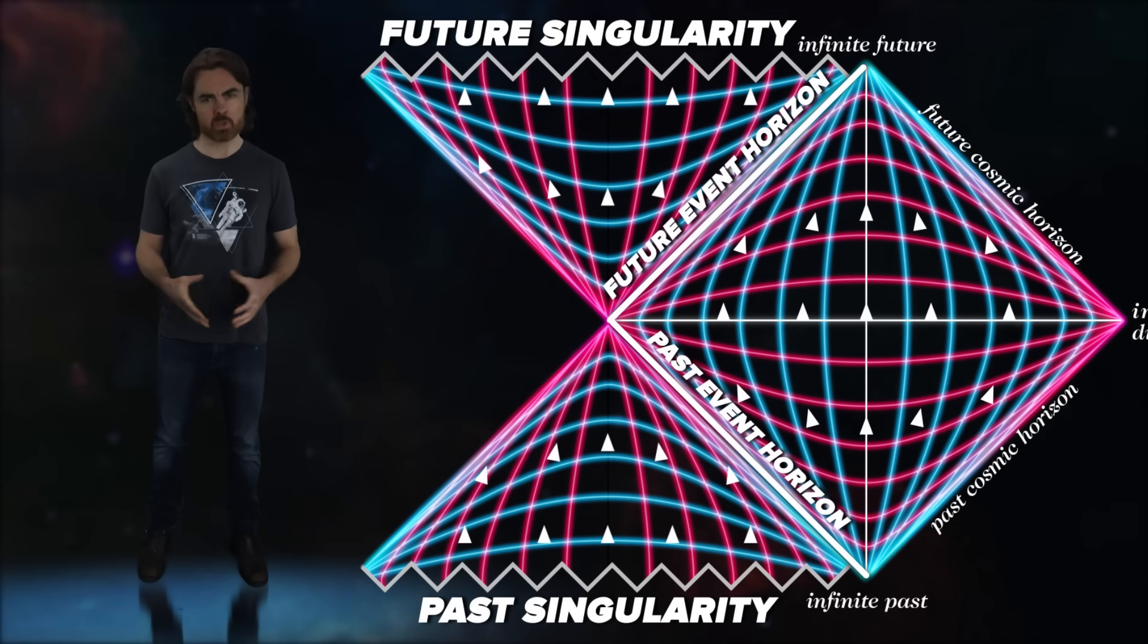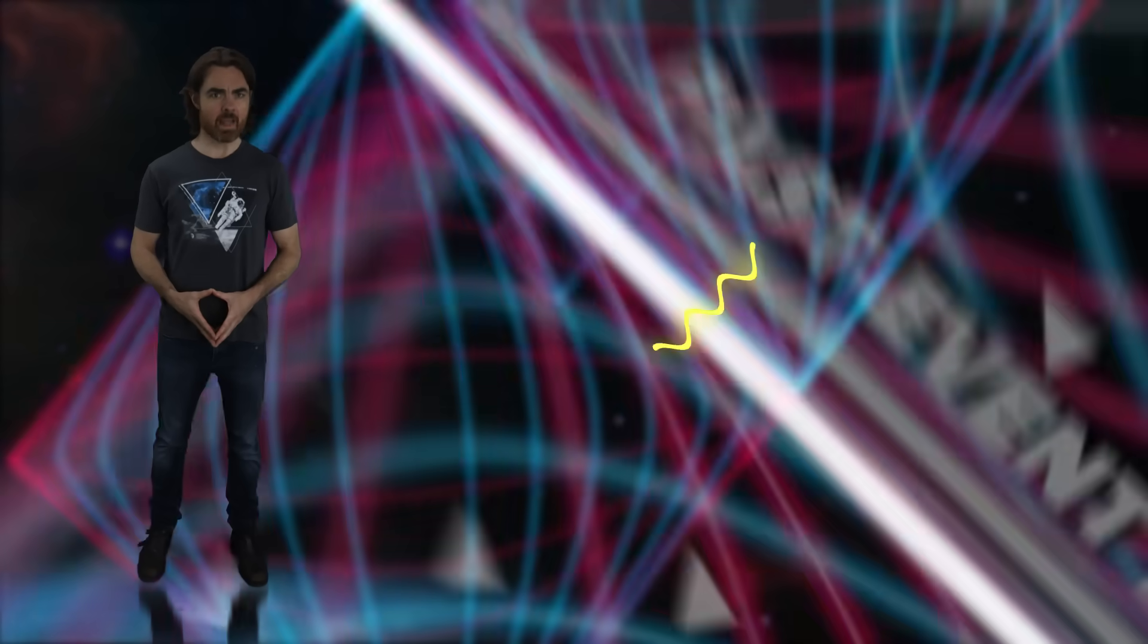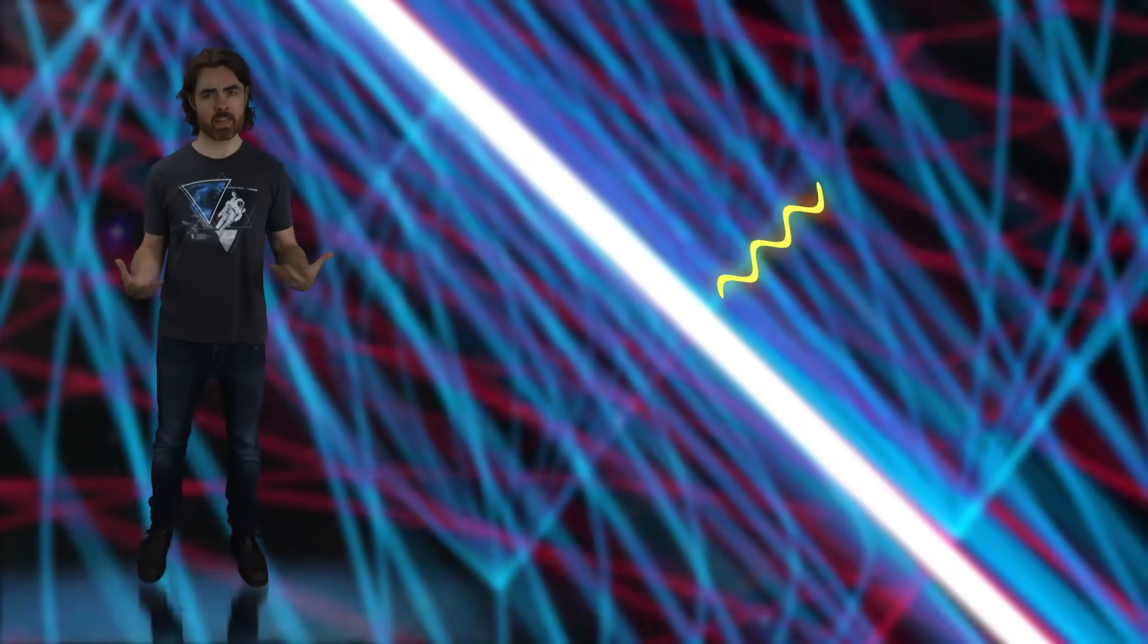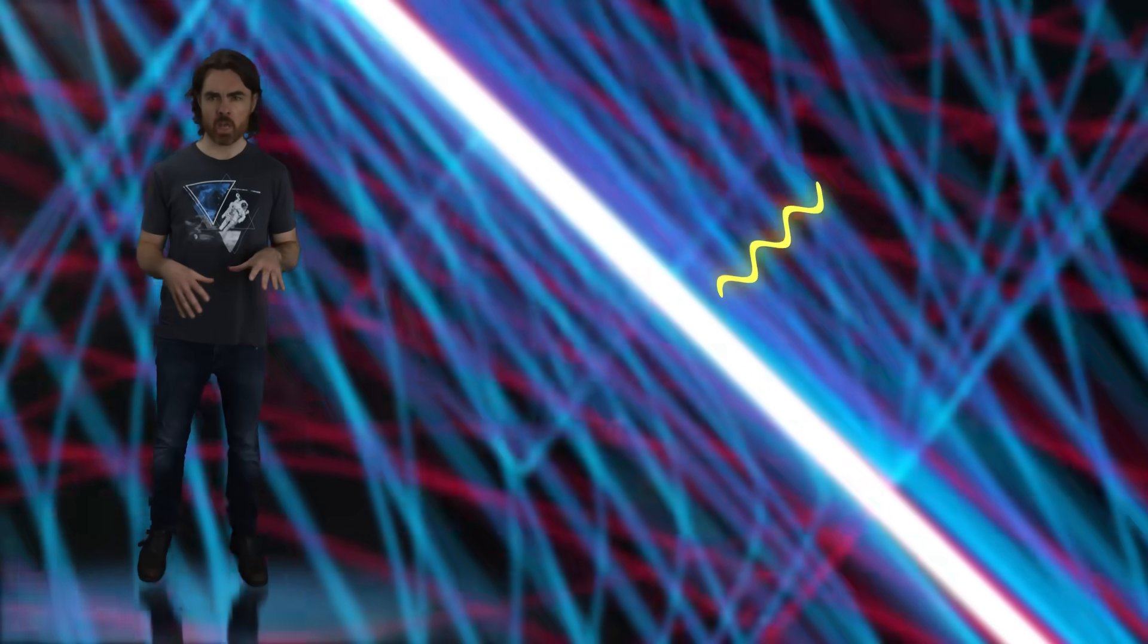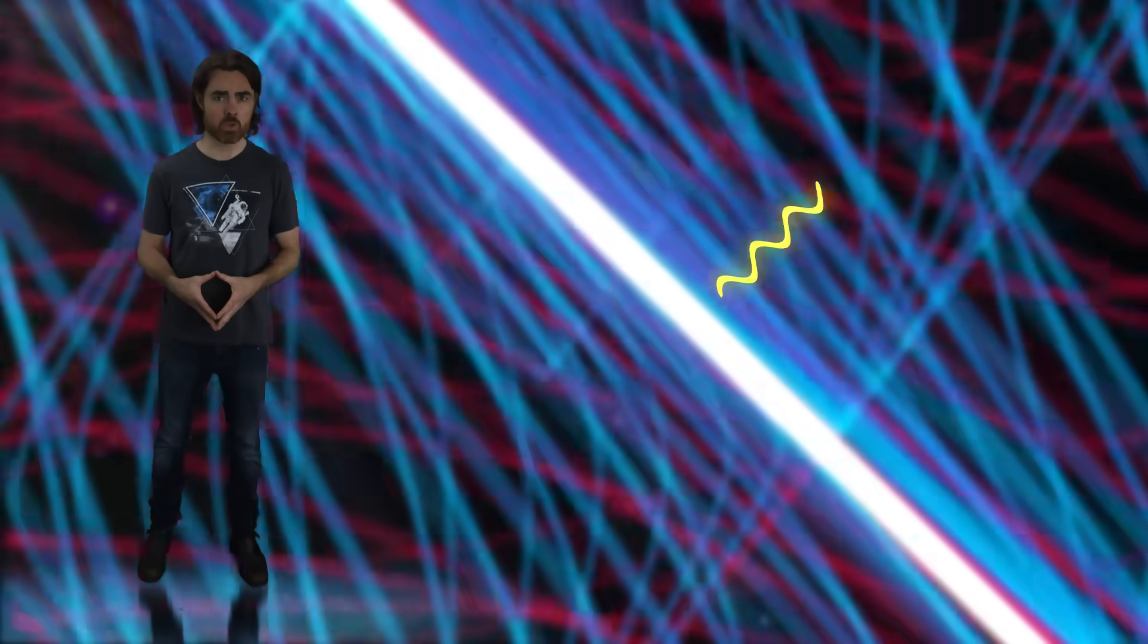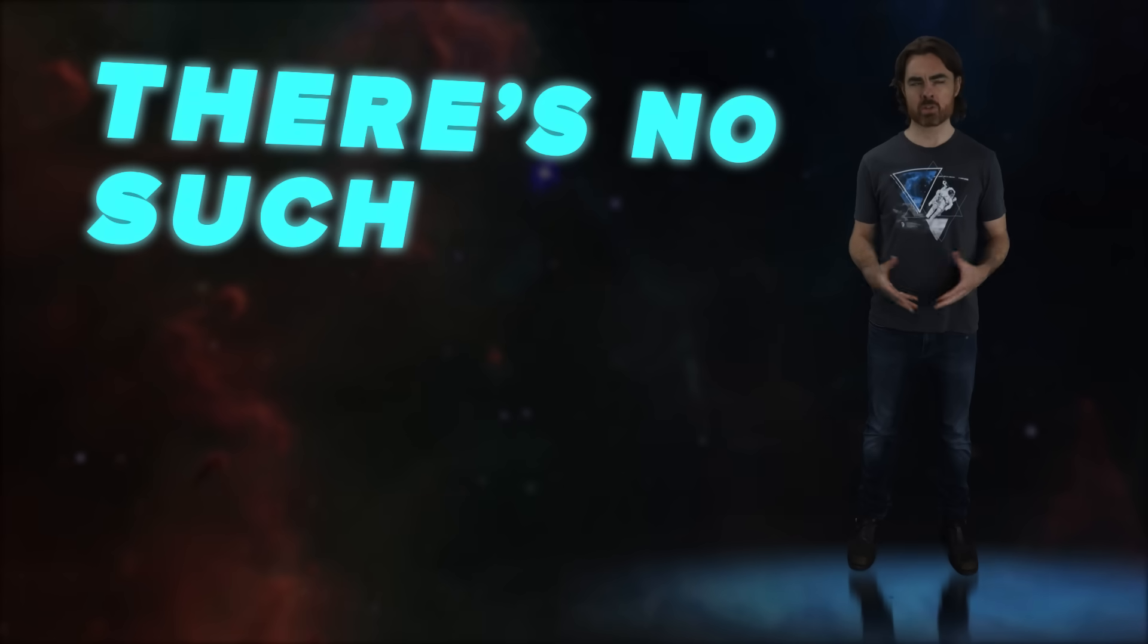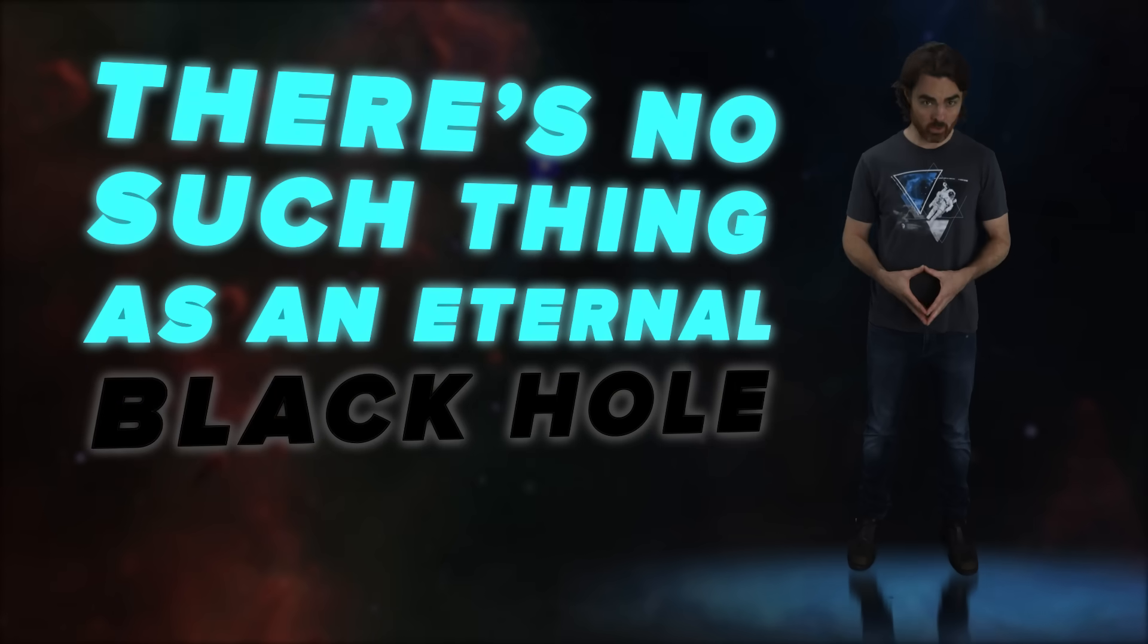However, it's not one that we can ever observe for two reasons. One, light rays exiting that past white hole can never reach us. The past singularity and past event horizon are infinitely far in the past from our point of view. Light has to traverse infinite time to reach our location. And two, there's no such thing as an eternal black hole. The universe hasn't existed for eternity, and it didn't even begin with black holes in place.